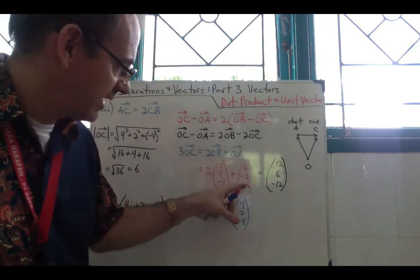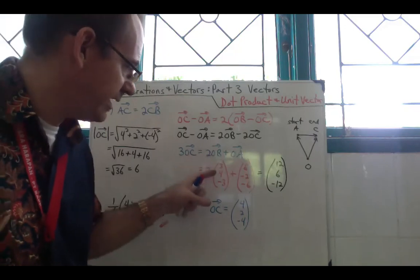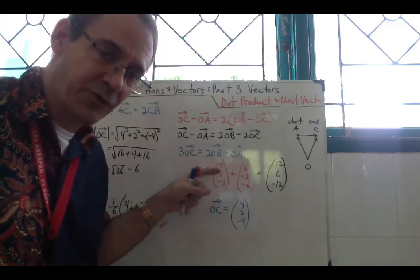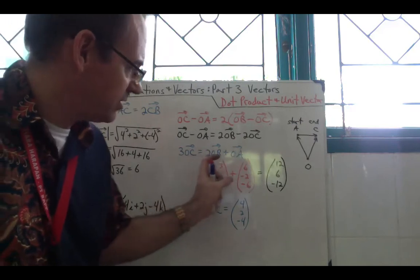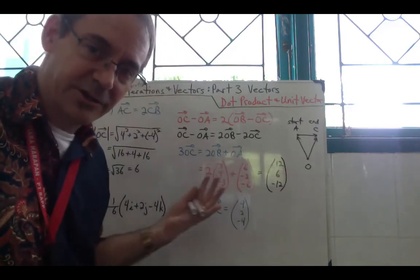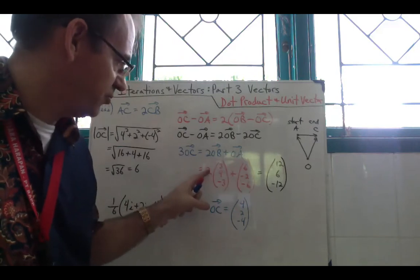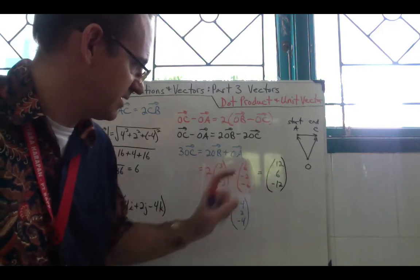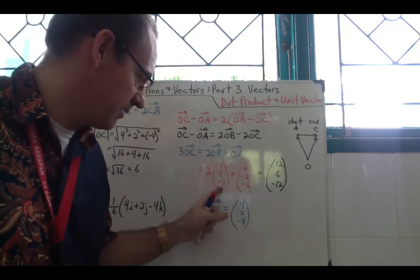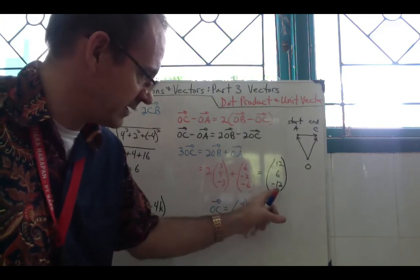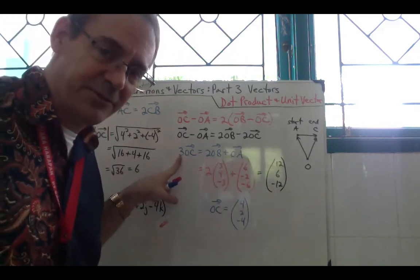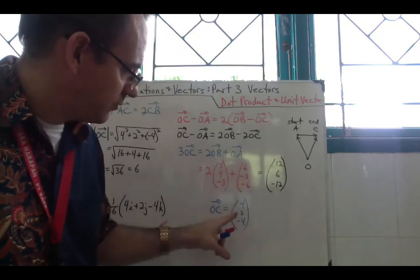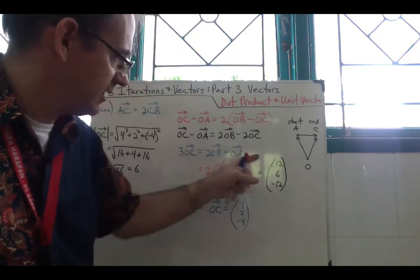So OC = (4, 2, -4) — this is the direction. Now we find the unit vector by dividing by the magnitude. |OC| = √(16 + 4 + 16) = √36 = 6. So the unit vector is (4, 2, -4) divided by 6.